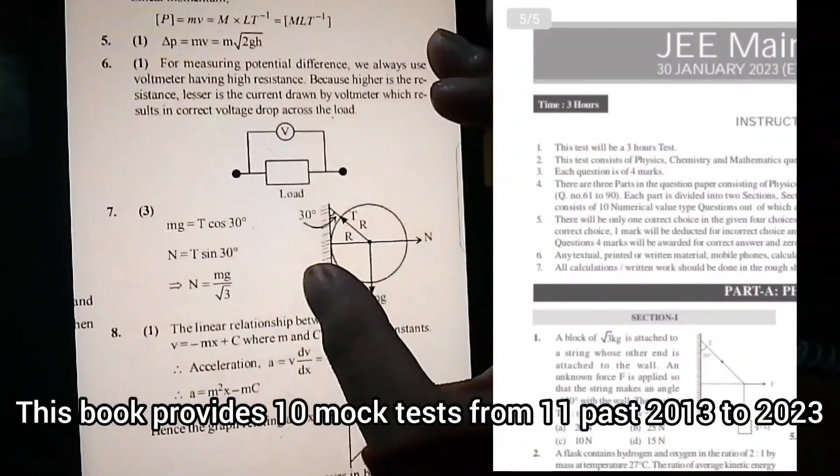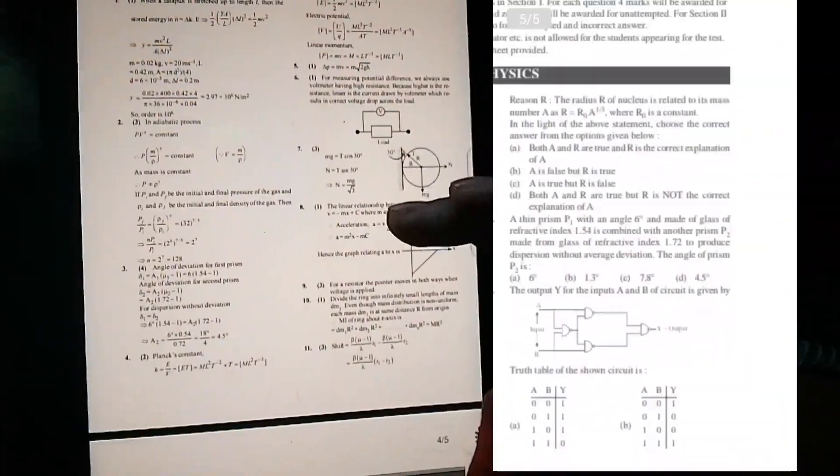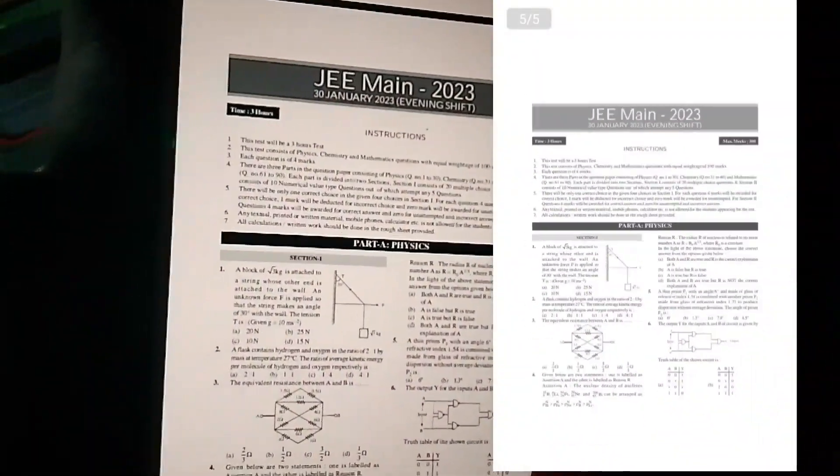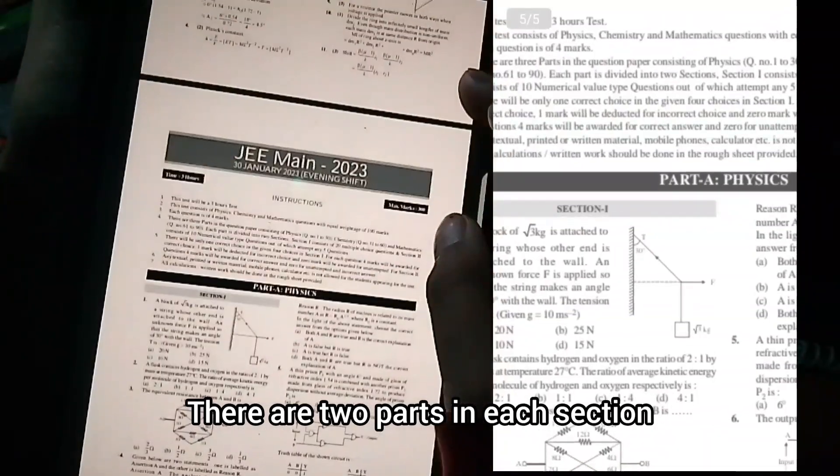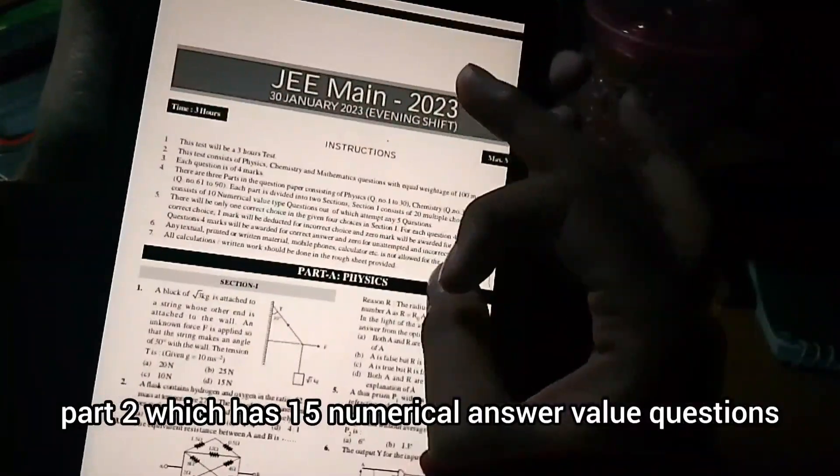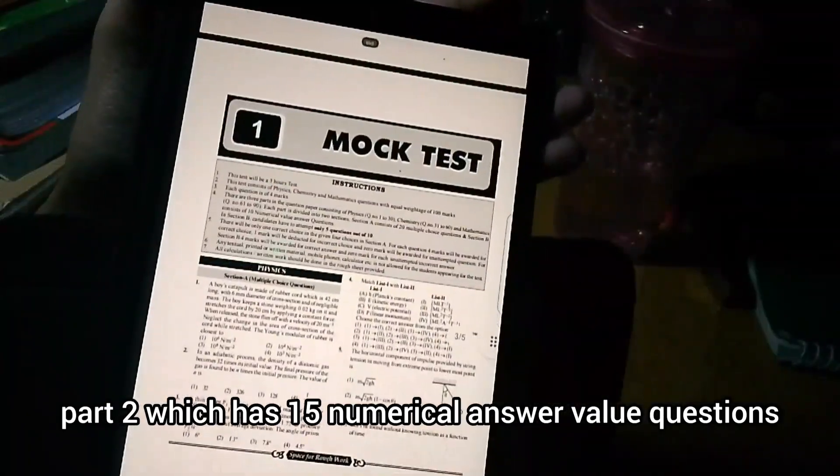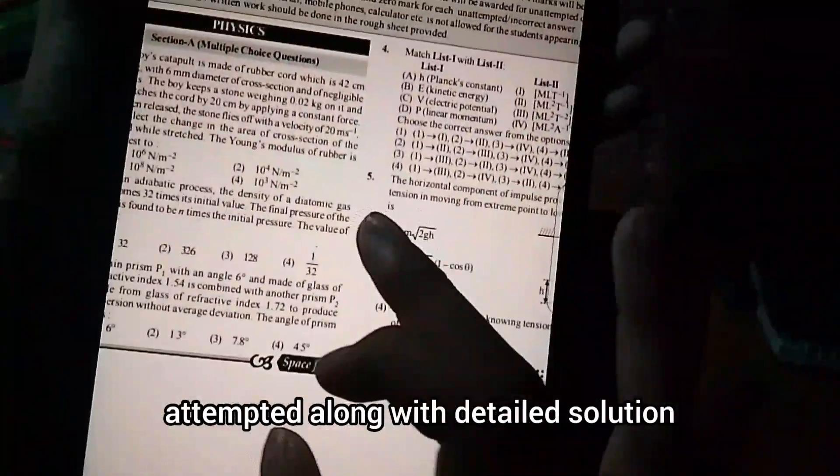This book provides 11 past years, 2013 to 2023, plus 10 mock tests which follow the latest syllabus and there are 90 questions with detailed solutions. There are two parts: Part 1 has 22 compulsory MCQs, Part 2 has 15 numerical answer value questions where only 5 questions need to be attempted, along with detailed solutions.